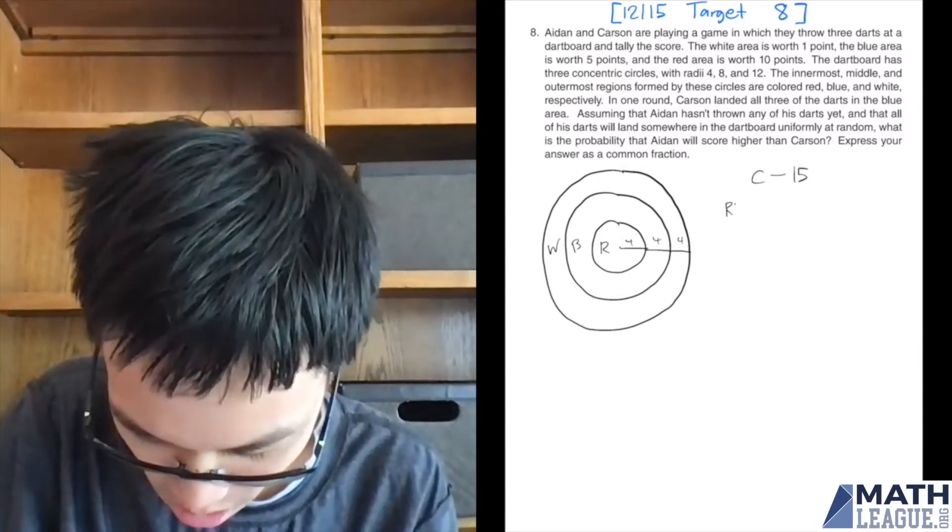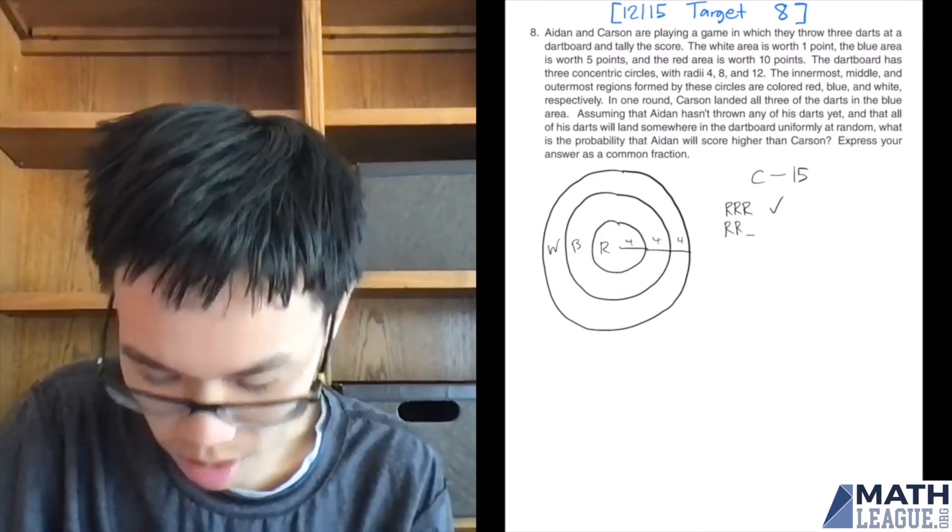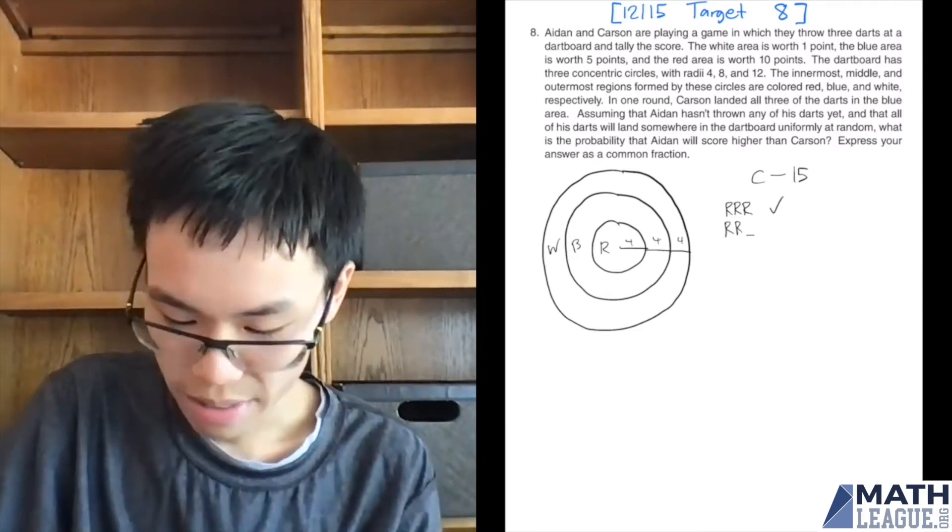So if Aiden scores three reds, that's a 30, we're good. Aiden scores two reds and somewhere else, two reds is good because that's 20.